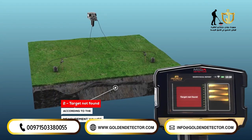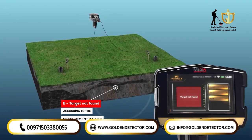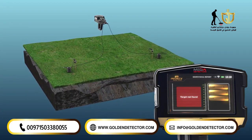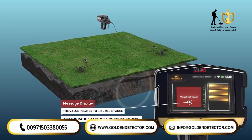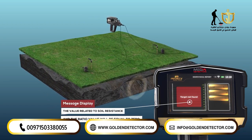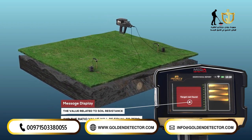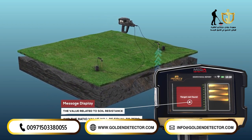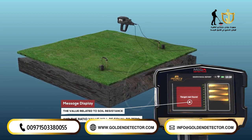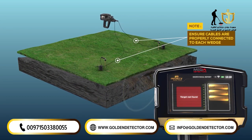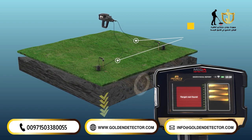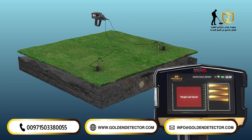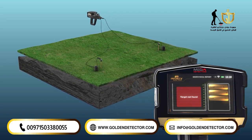Target not found: The ellipsoid curves will not be drawn; instead, a message will be displayed indicating the target was not found. In this case, the resistivity value and the rate value will both equal zero. Note: ensure cables are properly connected to each wedge — if one wedge is not connected, a message will be displayed indicating that the target was not found.